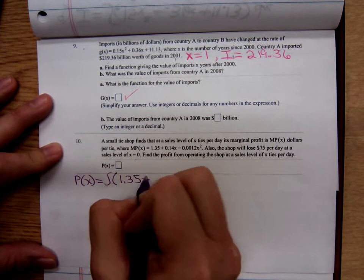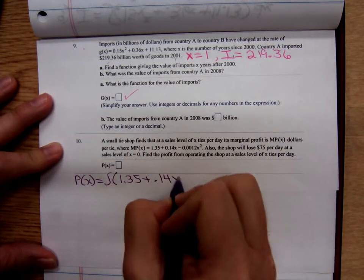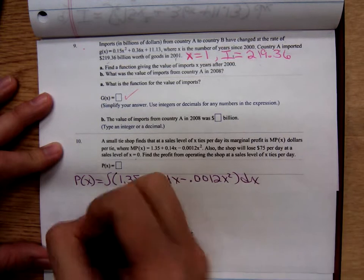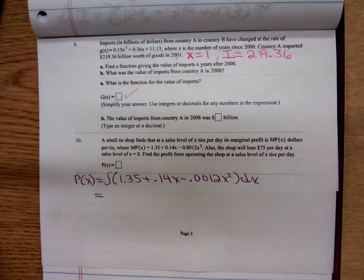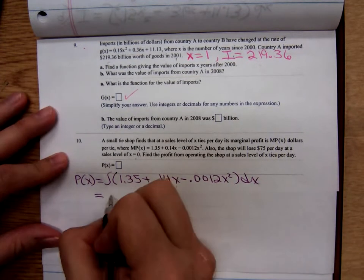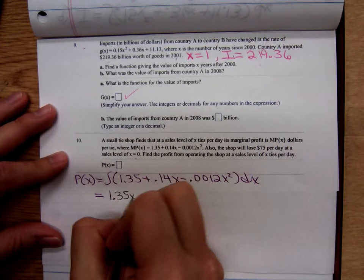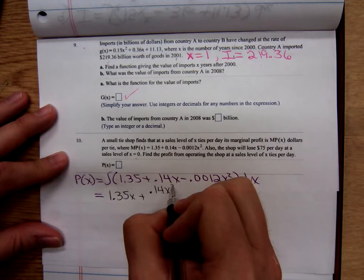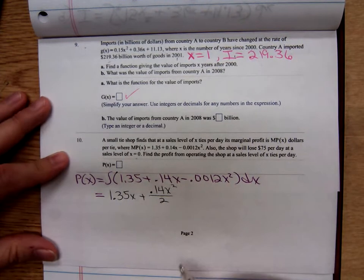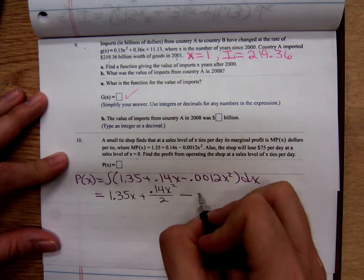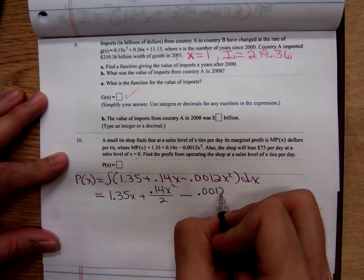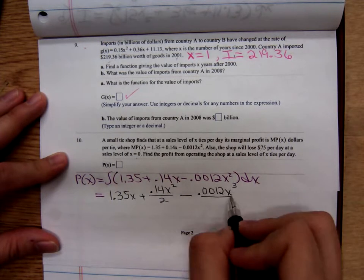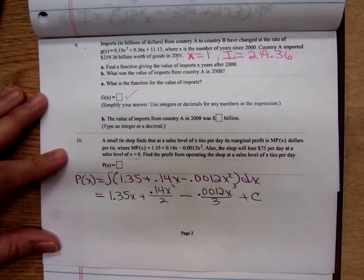Anti-differentiate the marginal profit function, and I'll do the anti-differentiation in black. That's going to be 1.35x plus 0.14, add 1, divide by 2, minus, add 1, that becomes a 3, divide by 3, plus my constant C.